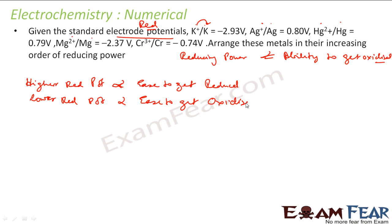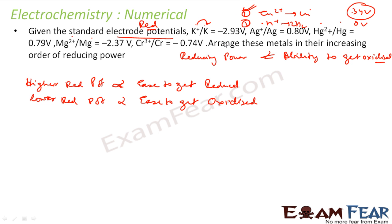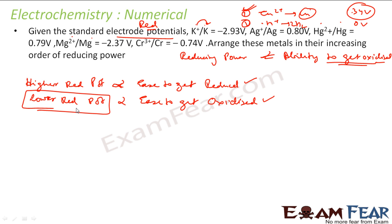Higher reduction potential means the reaction has a positive value, so it is feasible — for example Cu2+/Cu is +0.34 V, meaning that reduction is easy. Lower reduction potential means it is easy to get oxidized. We are looking for ability to get oxidized, so we want lower reduction potential. The one with the least reduction potential will be oxidized first.